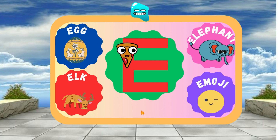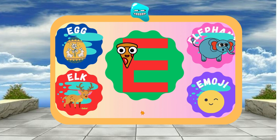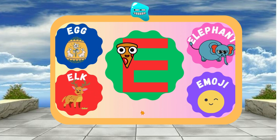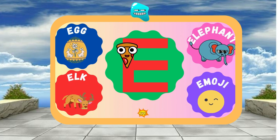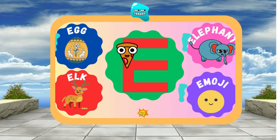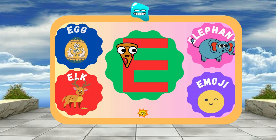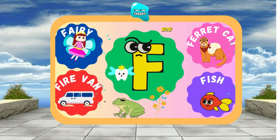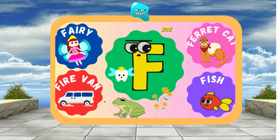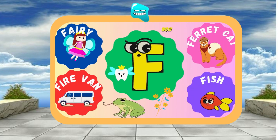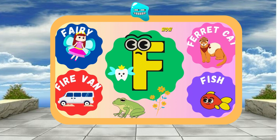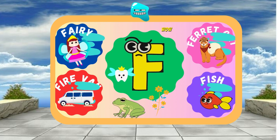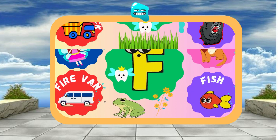E is for Egg — E, e, Egg. E is for Elephant — E, e, Elephant. F is for Frog — F, f, Frog. F is for Flower — F, f, Flower.